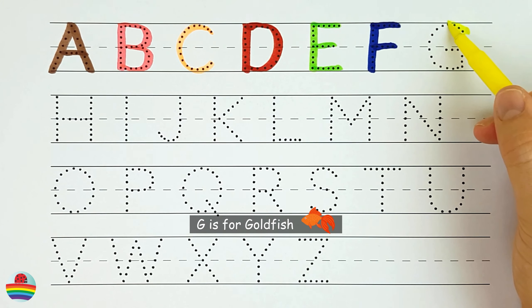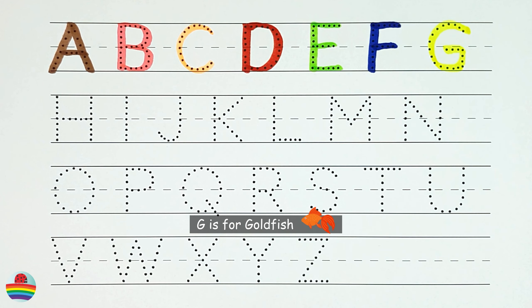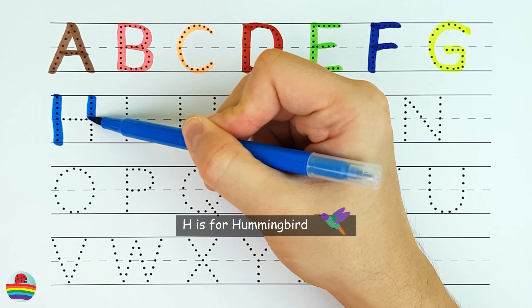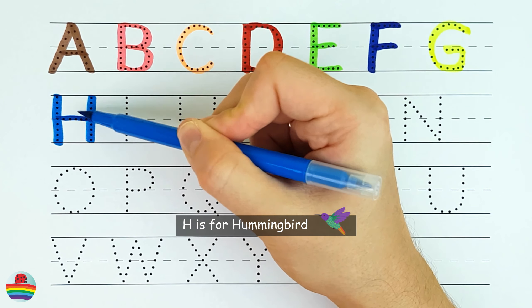G. G is for goldfish. H. H is for hummingbird.